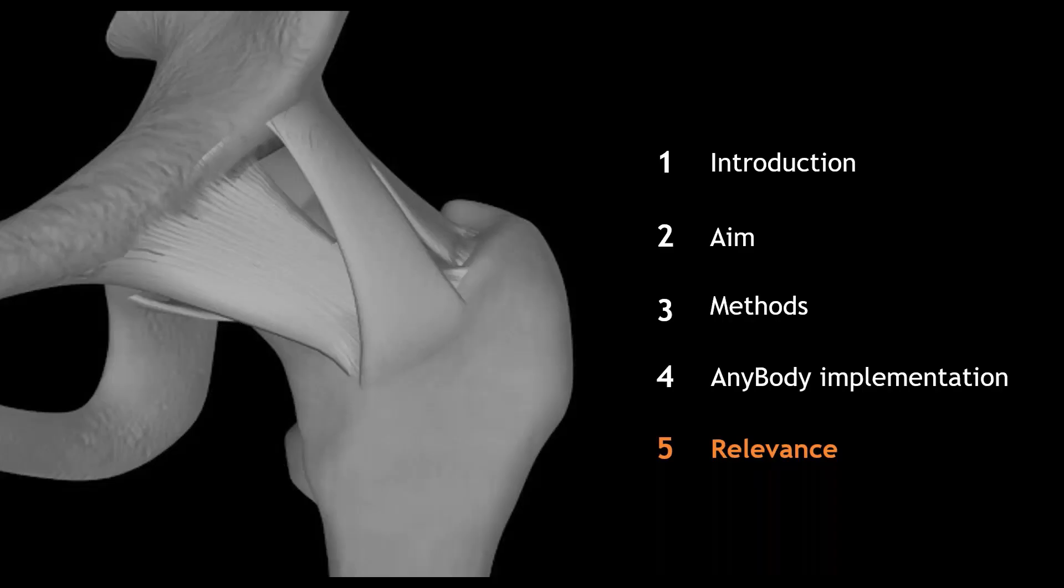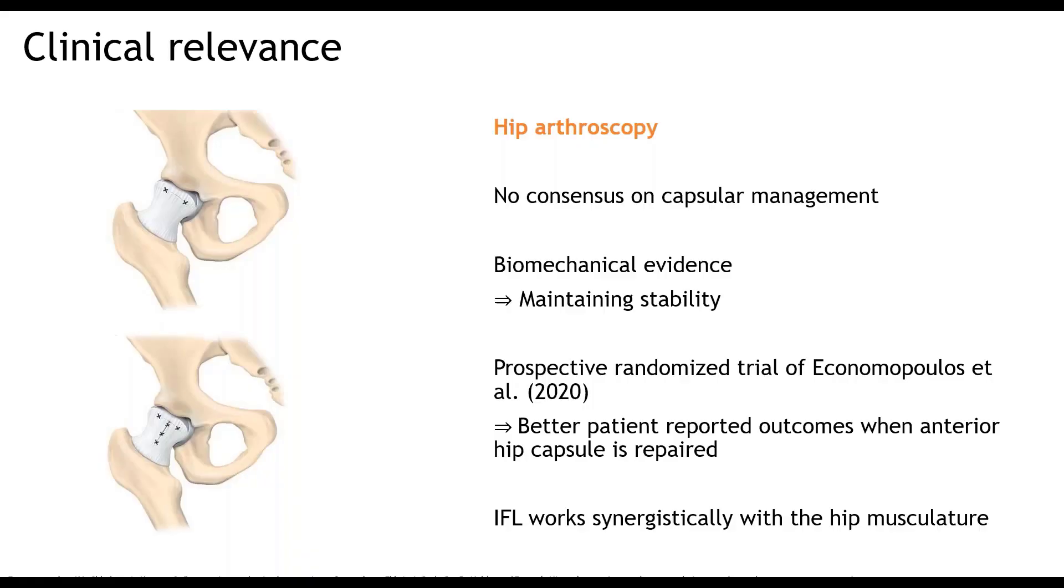But what does this now mean? What implications does this have? First of all, these findings have a clinical relevance. Currently, in hip arthroscopy, there is no consensus on capsular management. In literature, you can find evidence that closing the hip capsule after an arthroscopy improves stability. Further, Ekonomopoulos and his colleagues found in a prospective randomized trial that there are better patient-reported outcomes when the anterior hip capsule was repaired. Our study adds to this that the IFL works synergistically with the hip musculature, and that therefore repairing the capsule seems the most appropriate thing to do.